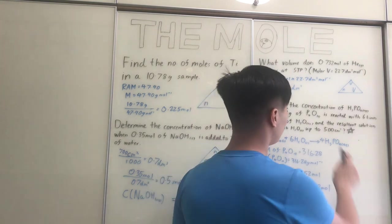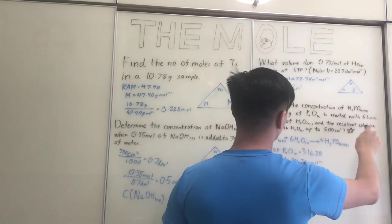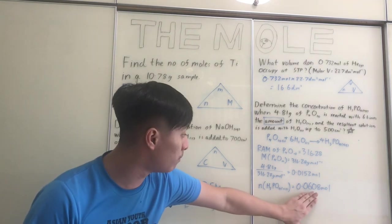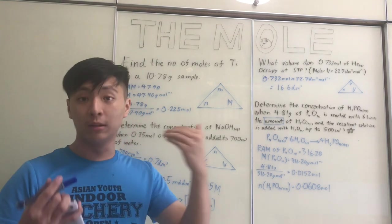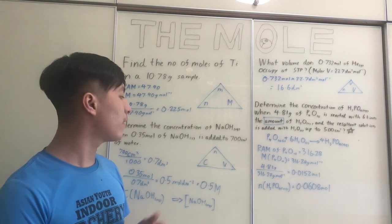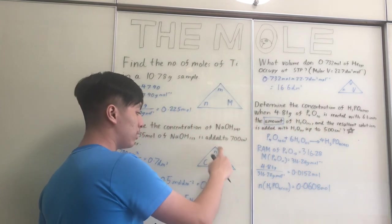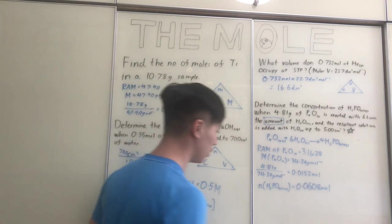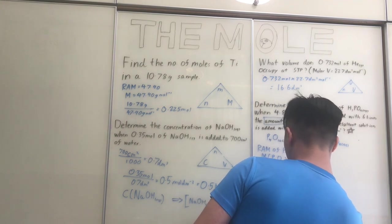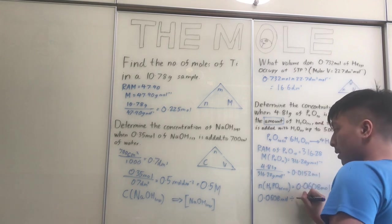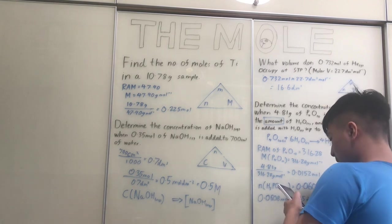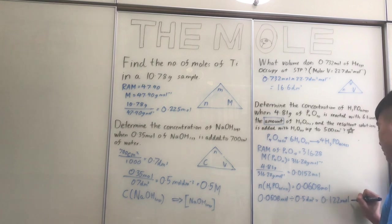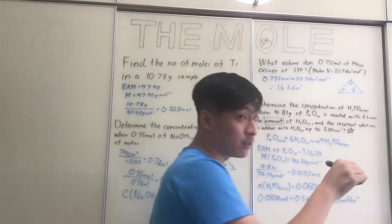Now for the second part: the resultant solution is added to water up to 500 cm³, which is 0.5 dm³. We know the moles (0.0608) and the volume (0.5 dm³), so concentration = N ÷ V = 0.0608 ÷ 0.5 = 0.122 mol dm⁻³, or 0.122 M.